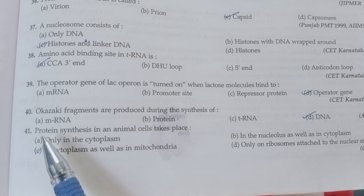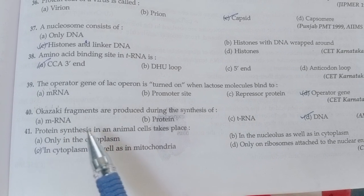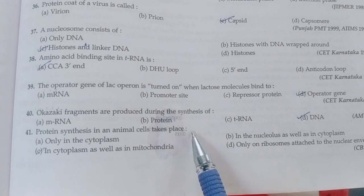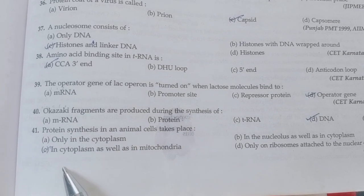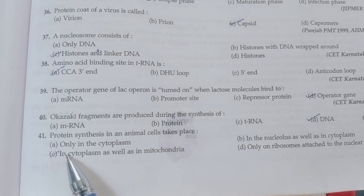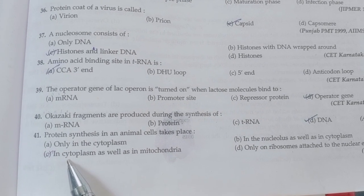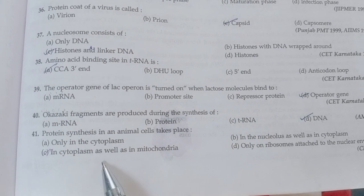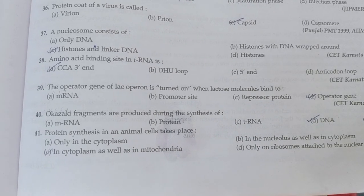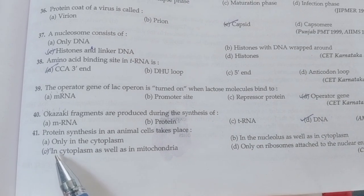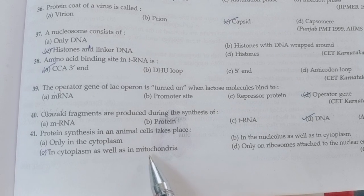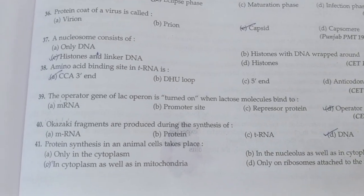Next: Protein synthesis in an animal cell takes place — option C is correct, in the cytoplasm as well as in mitochondria.